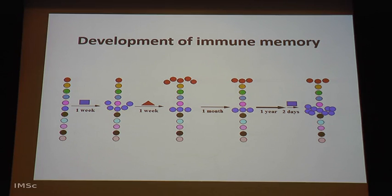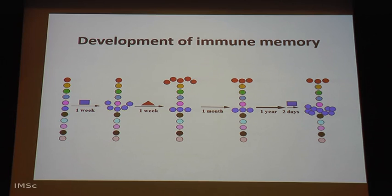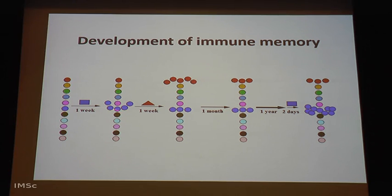The blue cell will only recognize blue antigen and the red cell will recognize only red antigen. If the blue color expanded and then with time cell numbers decreased — the expanded cells contracted — what you see is numbers that are more than the original but not as many as during the acute phase. These are the so-called memory cells. Memory frequency is always higher than the naive inexperienced cell frequency, but never as high as the expanded state.